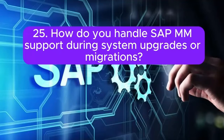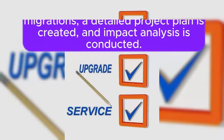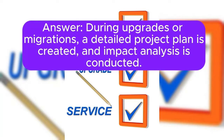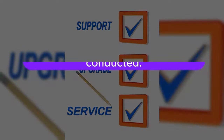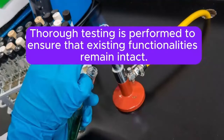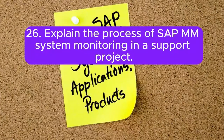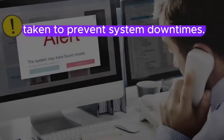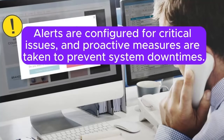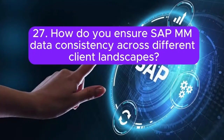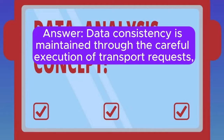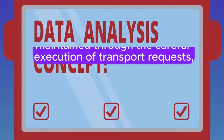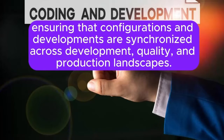Question 25: How do you handle SAP MM support during system upgrades or migrations? During upgrades or migrations, a detailed project plan is created and impact analysis is conducted. Thorough testing is performed to ensure that existing functionalities remain intact. Question 26: Explain the process of SAP MM system monitoring in a support project. System monitoring involves regular checks for performance, job status, and error logs. Alerts are configured for critical issues, and proactive measures are taken to prevent system downtimes. Question 27: How do you ensure SAP MM data consistency across different client landscapes? Data consistency is maintained through the careful execution of transport requests, ensuring that configurations and developments are synchronized across development, quality, and production landscapes.